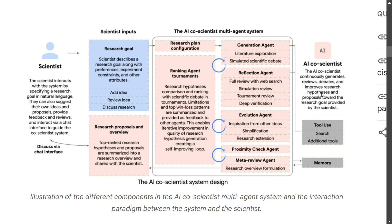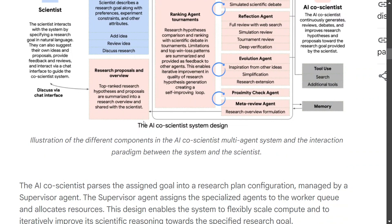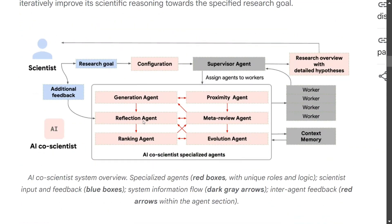The system also uses tools like internet search and additional tools, and it has memory as well. Looking at the full flow: the scientist starts with a research goal, goes through configuration, and a supervisor agent manages six worker agents. The scientist provides feedback, and there is a context memory used specifically by the evolution agent.